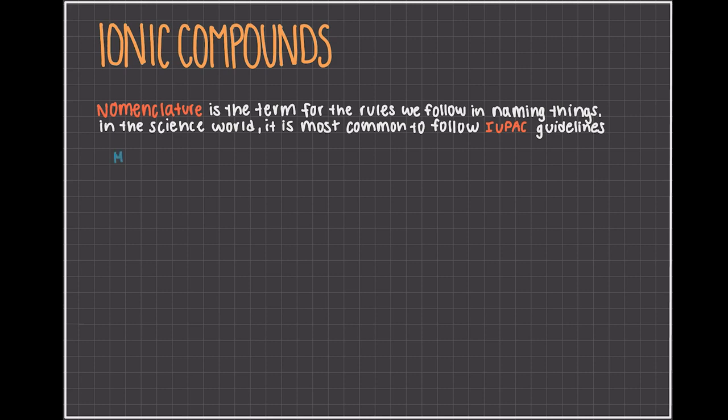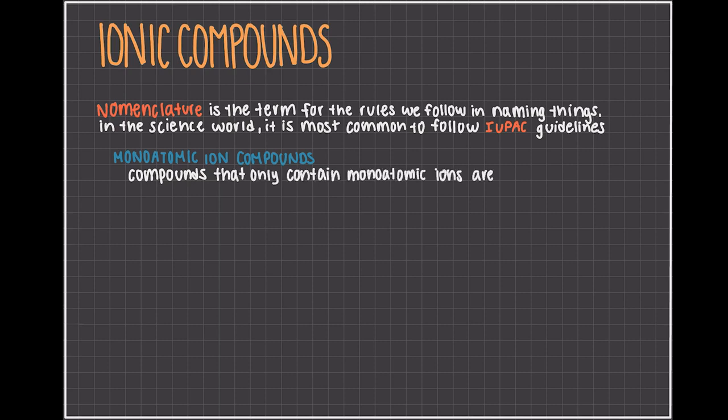Let's start with monatomic ion compounds. If you need some review on what a monatomic ion is, make sure and go watch our ionic and molecular compounds video. Compounds that only contain monatomic ions are named by the following rule: It's the name of the cation plus the name of the anion with 'ide' replacing the suffix.